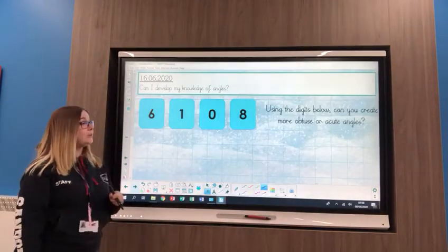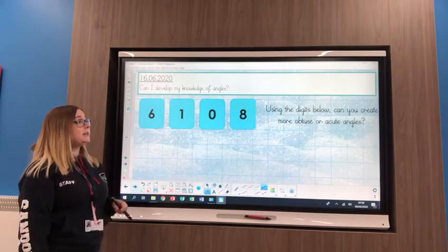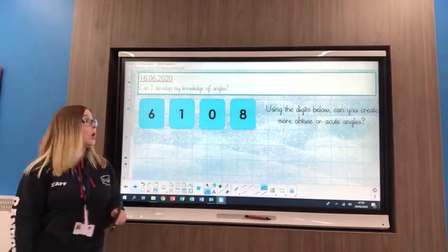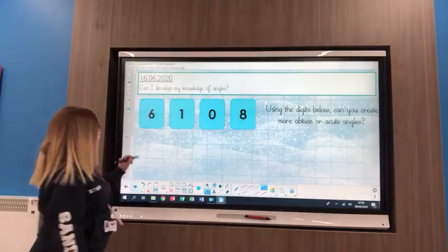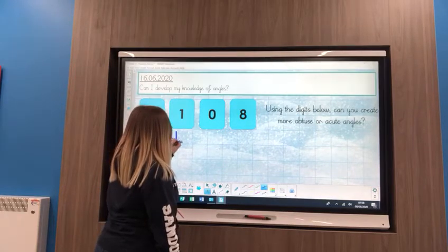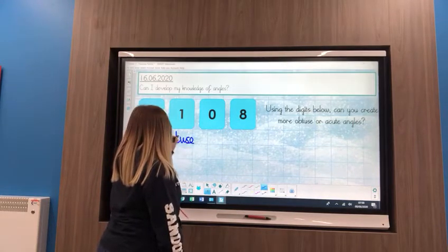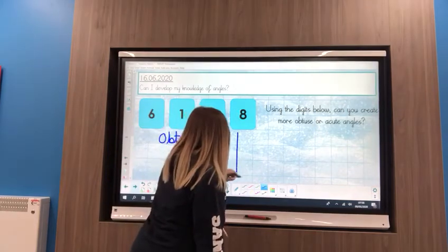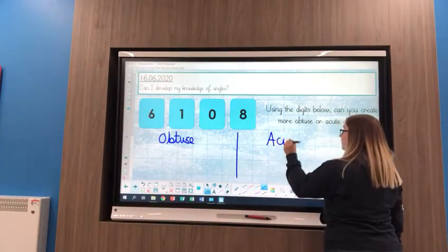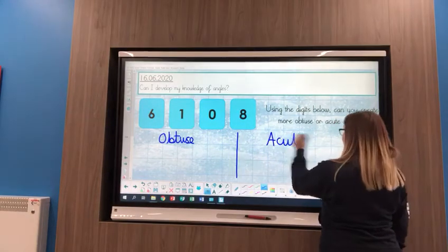Okay, last one then for today. It says using the digits below, can you create more obtuse angles or more acute angles? So I'm going to start by creating a little bit of a table. So there are my obtuse angles, and this side I'm going to have my acute angles.